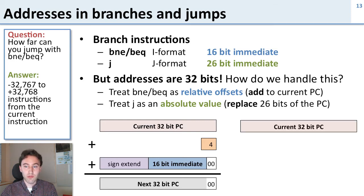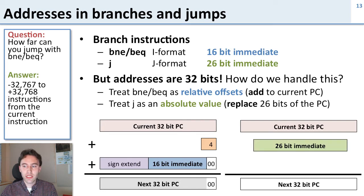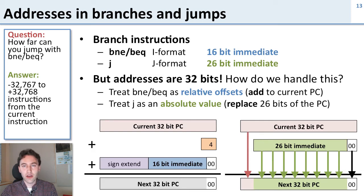Now let's take a look at the jump instruction. We have our current 32-bit program counter — the address of our current instruction — and we want to generate our next 32-bit program counter. We take the 26 bits of immediate data from the J-format and write them over the middle portion of the program counter. The higher bits that we don't overwrite are taken from the current program counter, and of course the last two bits are zero because all instructions are word-aligned.